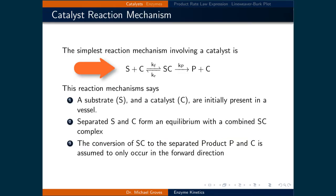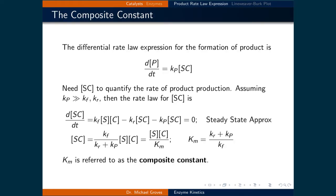The simplest reaction mechanism involving a catalyst is where a substrate and a catalyst react and form an equilibrium with the substrate-catalyst complex. This substrate-catalyst complex also reacts to form the product. In the product-forming step, the catalyst is regenerated and is ready to form the next substrate-catalyst complex. The rate law expression for the formation of product is the rate of change of the concentration of the product with respect to time being equal to the rate constant kp times the concentration of the substrate-catalyst complex.